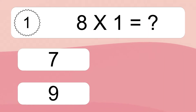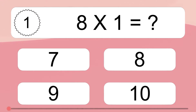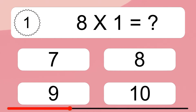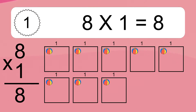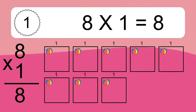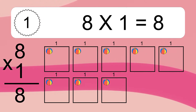8 times 1 equals what? 8 times 1 equals 8. We have 8 boxes, and each box has 1 colorful ball inside. If you count all the balls in all the boxes together, you will have 8 times 1 balls. This equals 8 balls.